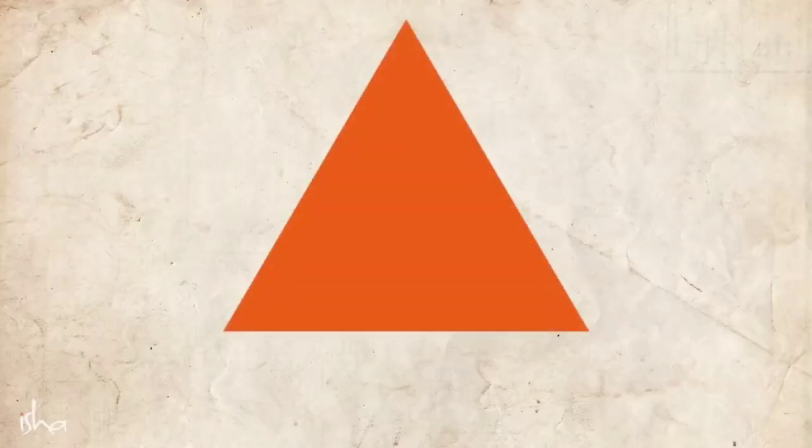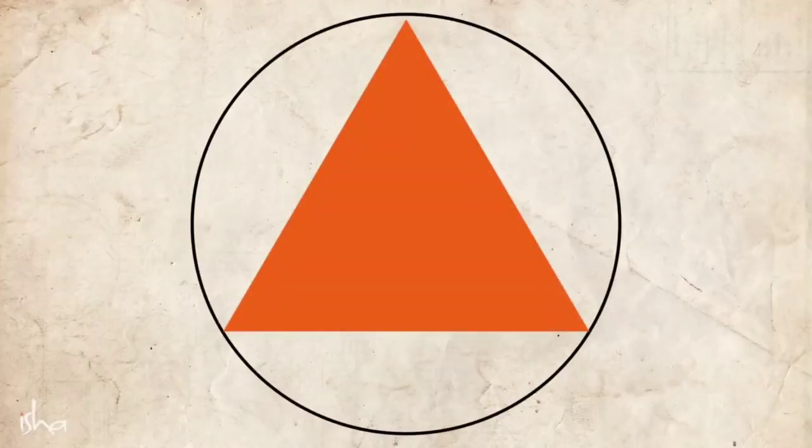So that orange triangle with the circle around it is the Ajna chakra, which is the chakra of enlightenment and knowledge and knowing and perception. Because yoga is the science of perception — yoga is the science of ultimate perception. So Isha Yoga uses the symbol of ultimate perception: an orange triangle with the circle.